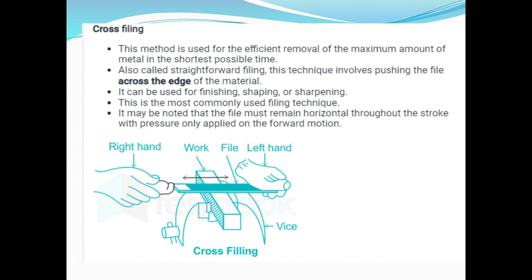The first method is cross filing. This method is used for the efficient removal of the maximum amount of metal in the shortest possible time. This technique involves pushing the file across the edge of the material. This method is used for finishing, shaping, and sharpening, and is the most commonly used filing technique.